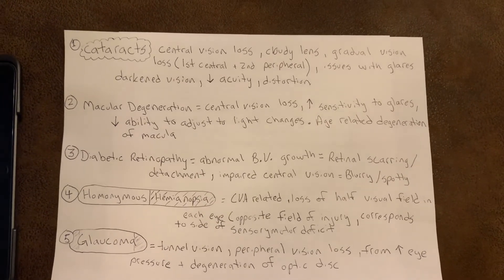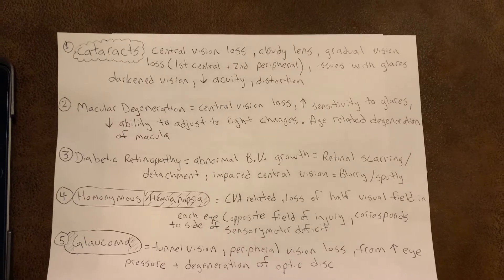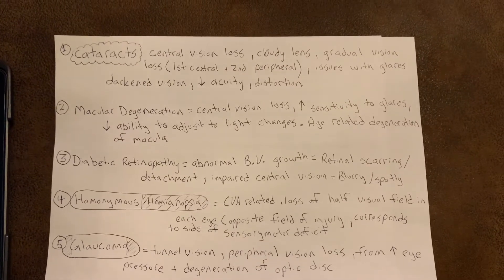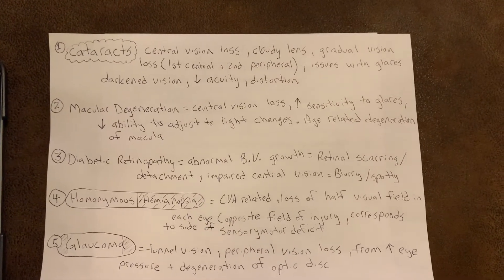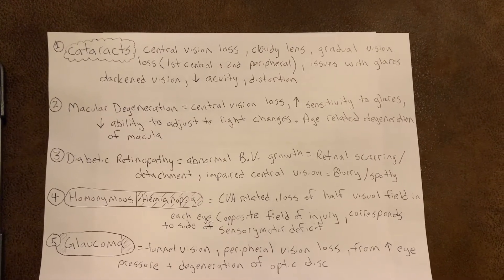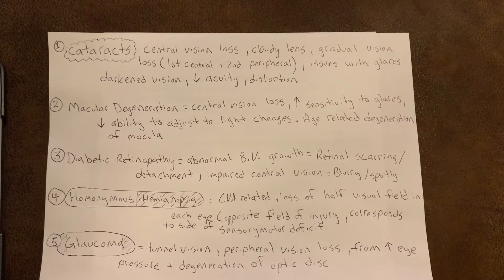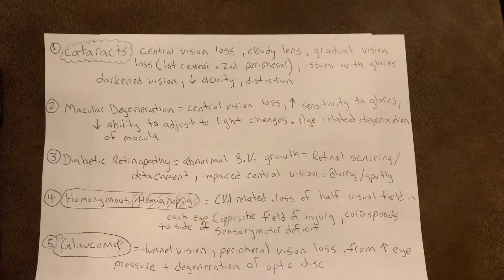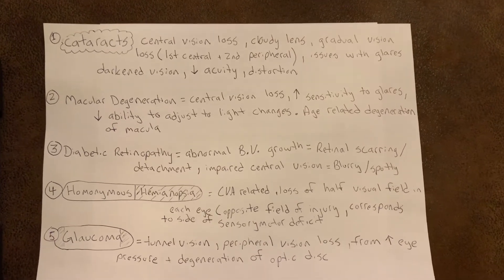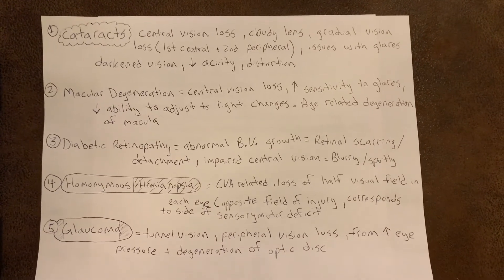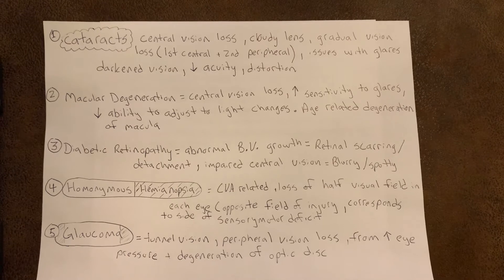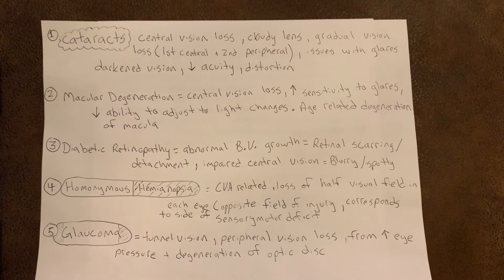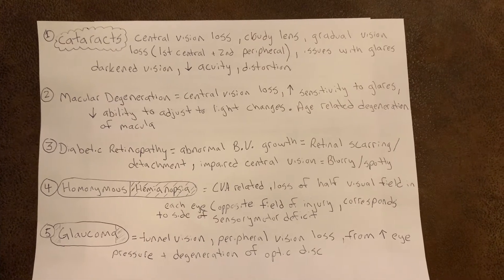It's a gradual vision loss that begins in the central vision and then slowly moves to the peripheral vision. Cataracts also have an issue with glares, darkened vision, decreased acuity, and distortion.